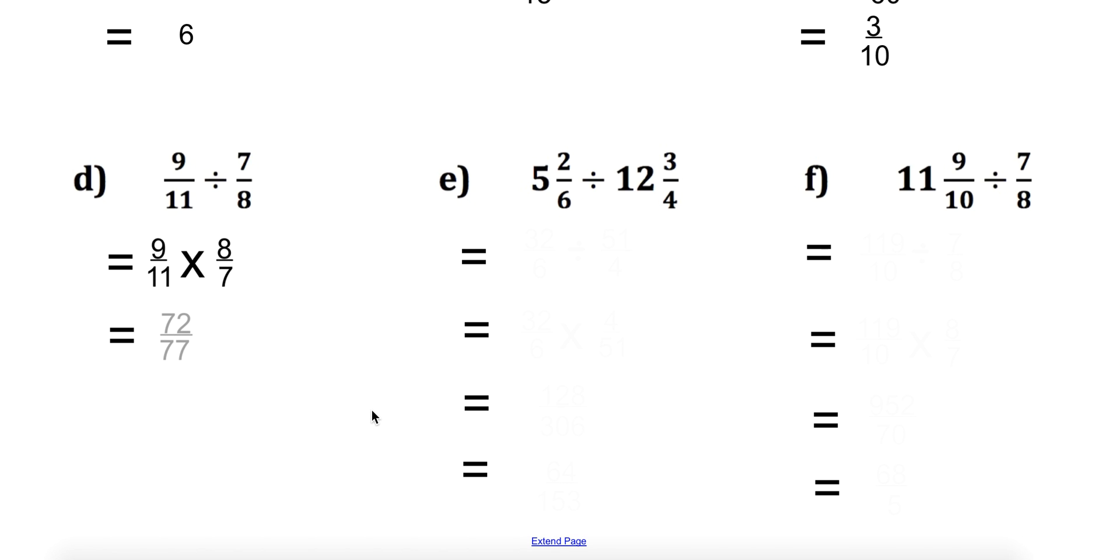Looking at this, we're flipping the second fraction and multiplying. Here I need to go from a mixed number, in both cases, to an improper fraction.